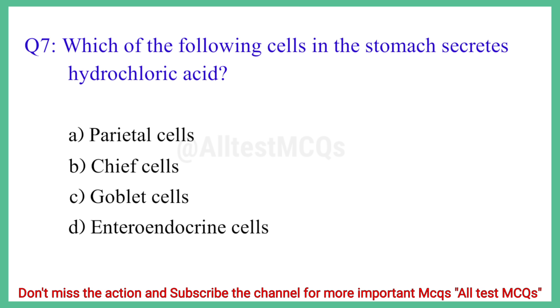Question No. 7: Which of the following cells in the stomach secretes hydrochloric acid? The correct answer is option A: Parietal cells.